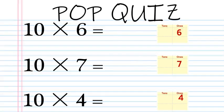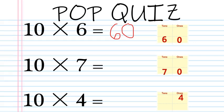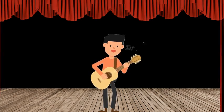It's our last pop quiz — we can do this! Ten times six: when multiplying by ten, move it to the tens place, so the six moves to the tens place — that's sixty. Ten times seven: move the seven to the tens place — that's seventy. Ten times four: move the four to the tens place — ten times four is forty. That's the end of our show, have a great day!